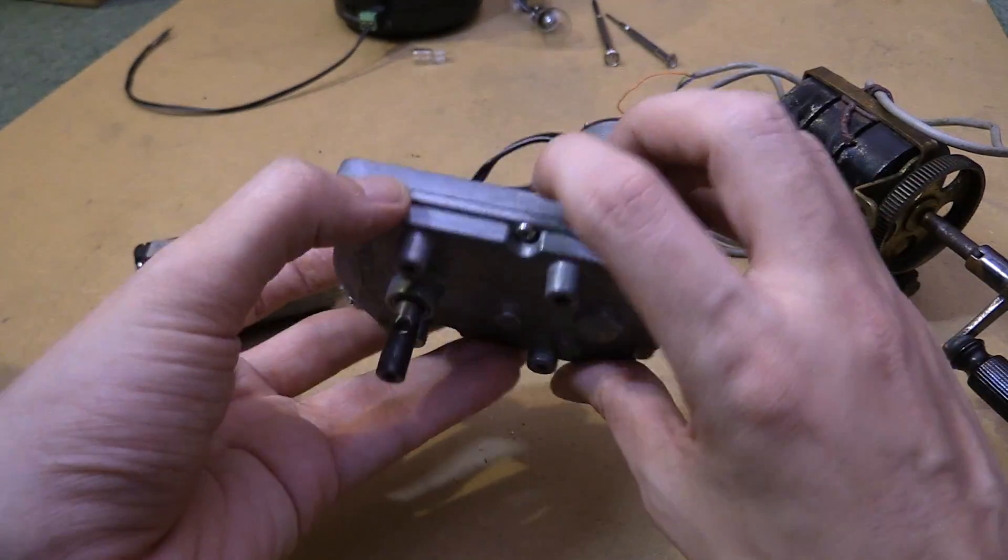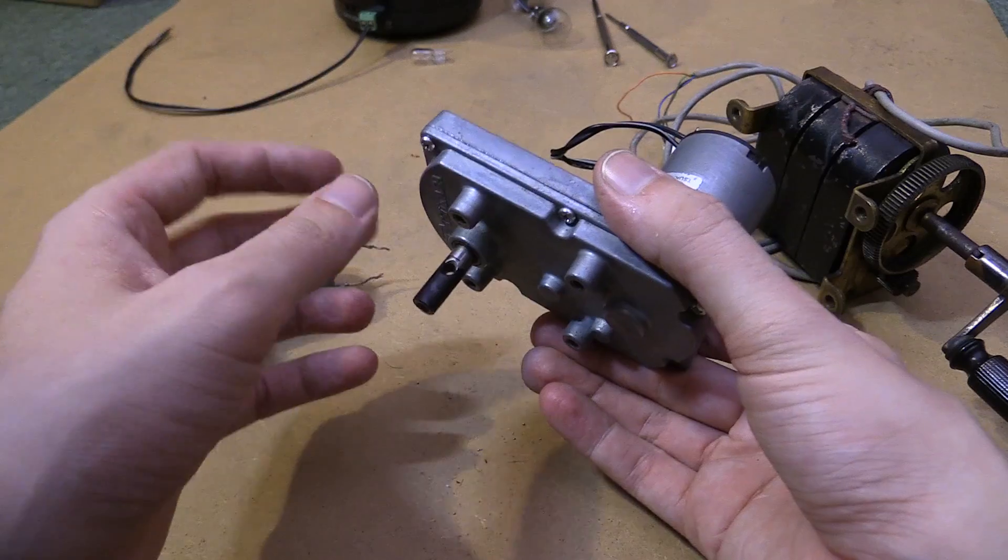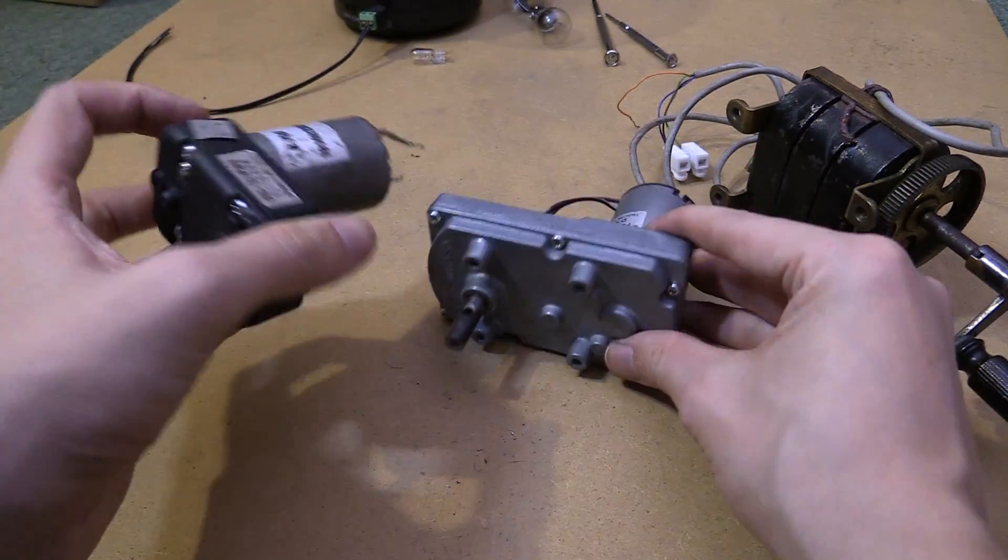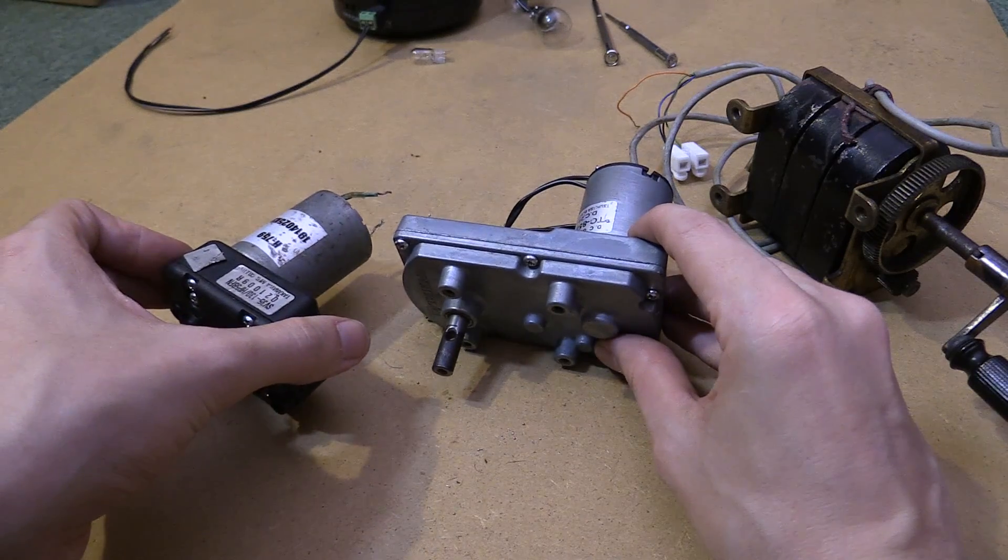Now I believe this one here was used as an electric garage door opener or electric blinds, something like that. And this one here I'm not too sure about, but both of them you can find being sold in bulk and they're not too expensive.